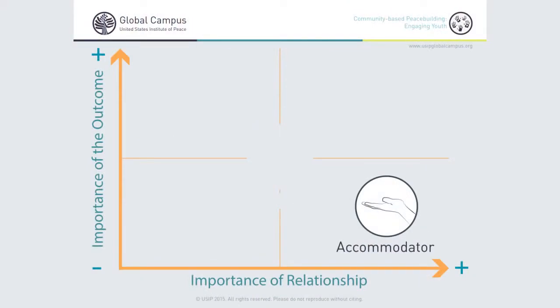On the bottom right of the graph we have accommodating. An accommodator is somebody who is more interested in the nature of the relationship and maintaining a good relationship with the person with whom they're in conflict than they are in the outcome. An accommodator is willing to give something to someone else in order to maintain the relationship.